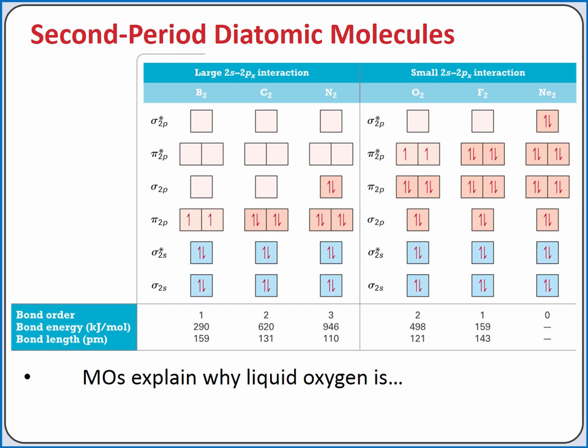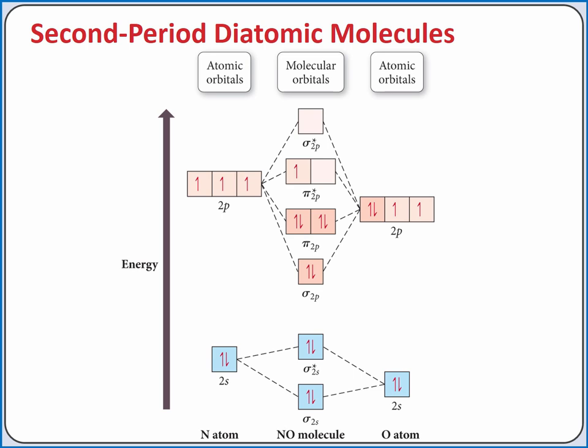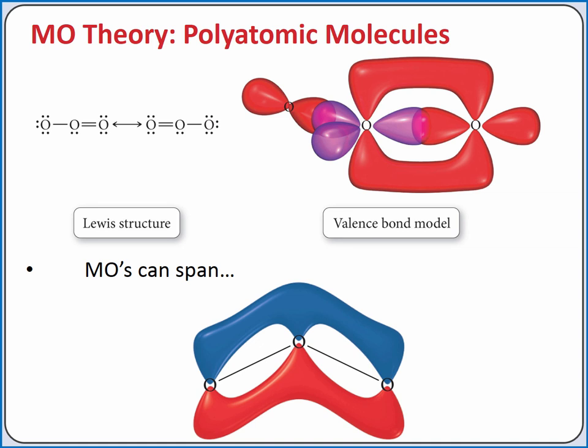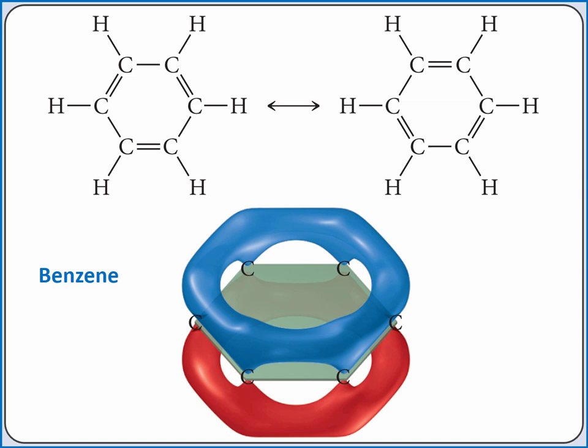We can also create molecular orbitals for diatomic molecules composed of two different atoms, with the relative ordering of energies determined computationally for each molecule. Molecular orbital theory can also be applied to larger molecules to delocalize electrons across the entire molecule — for example, molecular orbitals can span all three oxygen atoms in ozone or all six carbon atoms in benzene. Although this model can be more difficult to work with computationally, requiring a higher level of mathematical modeling, it can represent molecules in ways our other models cannot.